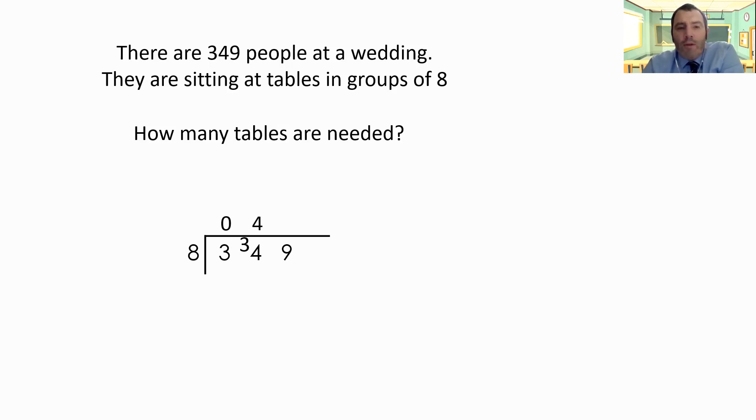The answer that's going to give me four and I've got a remainder of two. So I'm going to exchange my two tens across. I'm going to have 29 ones. So I'm going to divide 29 by eight. That's going to give me three. So I need 43 tables. And we have a remainder of five.